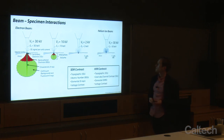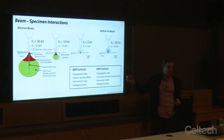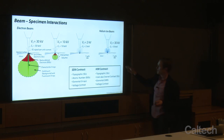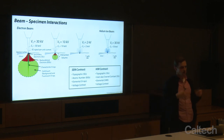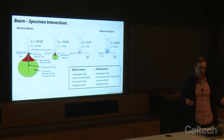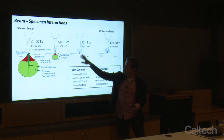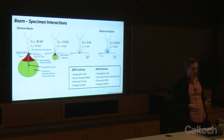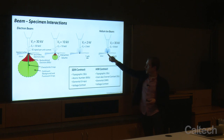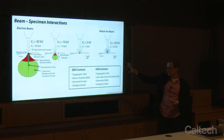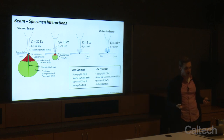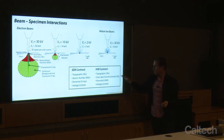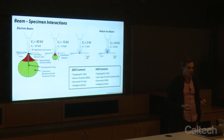With helium, we're mostly getting secondary electrons — good for topographic contrast — but we're not going to get backscattered ions for atomic number contrast. For elemental contrast, we have to do SIMS, secondary ion mass spectroscopy. By voltage contrast, if charge builds up on the sample, that changes the ability for secondary electrons to escape, which changes how bright or dark your image ends up being.